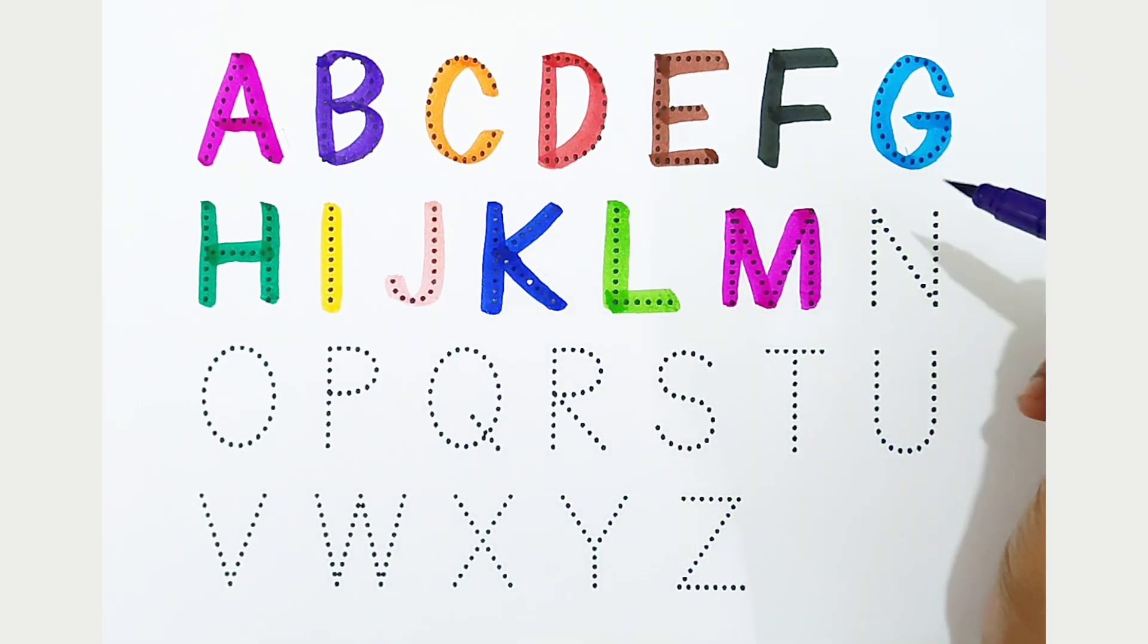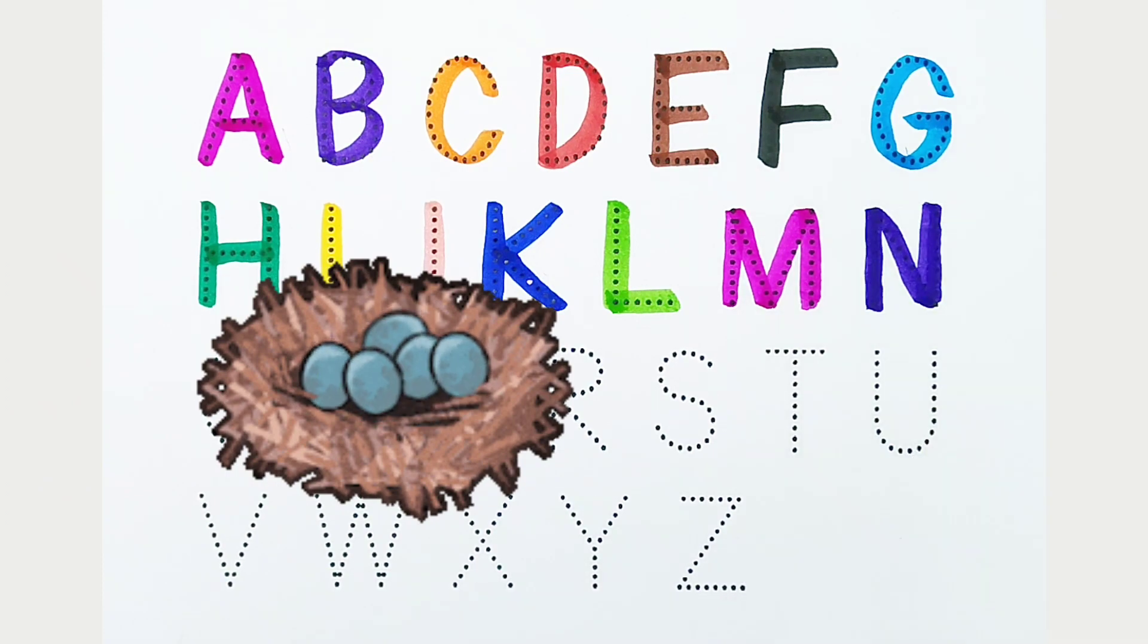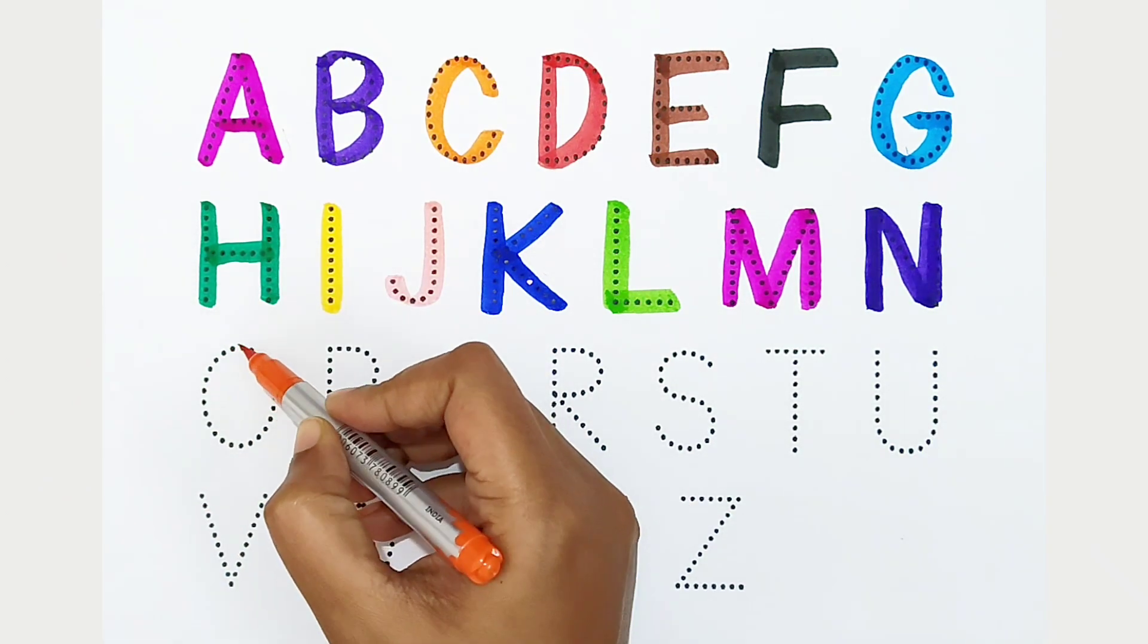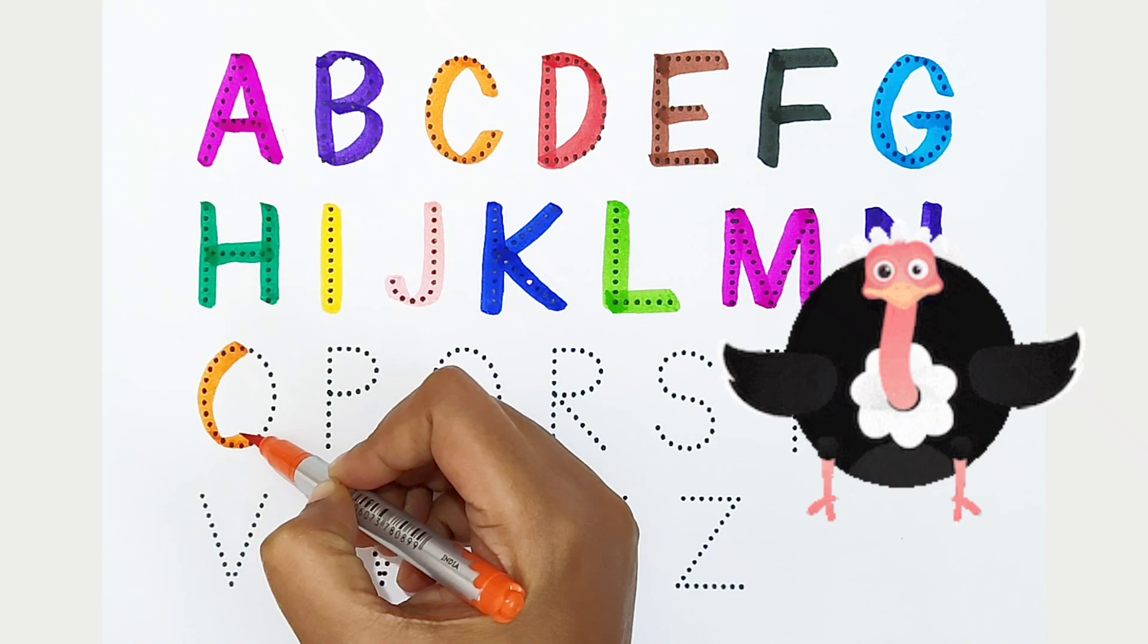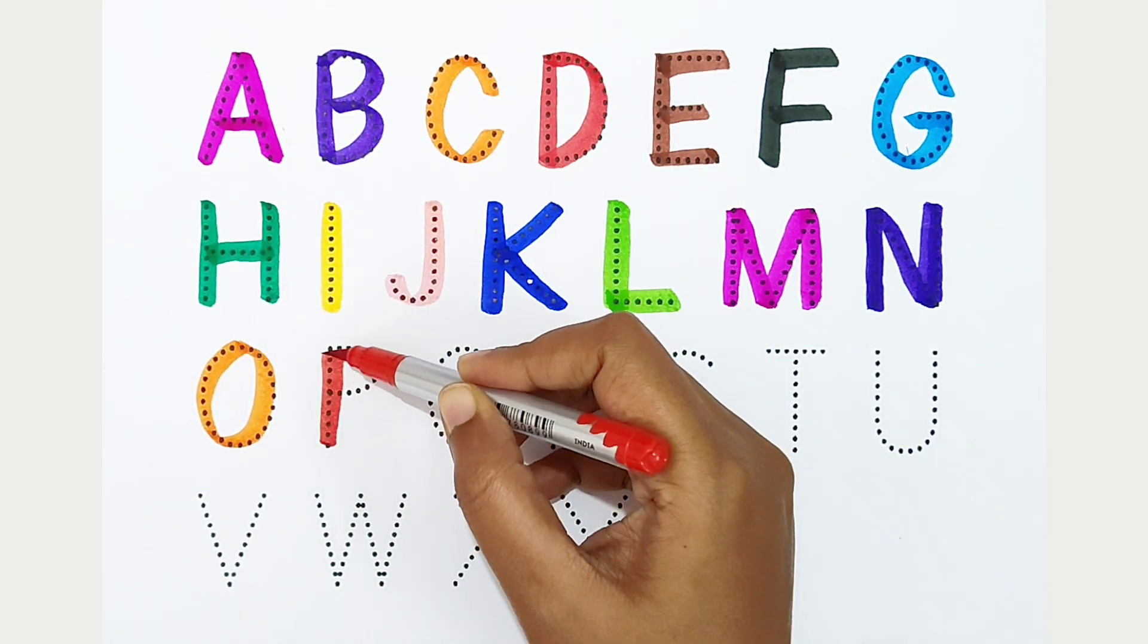N, violet color, N is for nest. O, orange color, O is for ostrich. P, red color, P is for penguin.